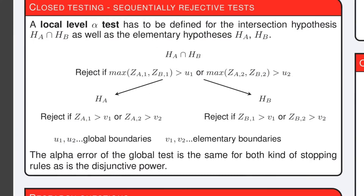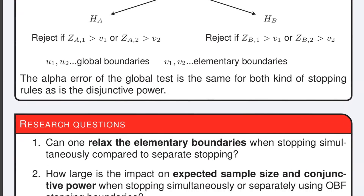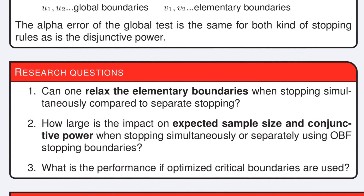To control the family-wise error rate, we use the closed testing principle. To this end, we define group sequential boundaries for both the intersection hypothesis test as well as the elementary hypothesis tests. Our research addresses the following questions.